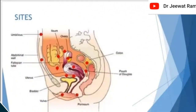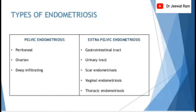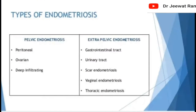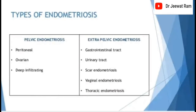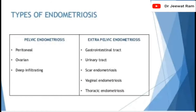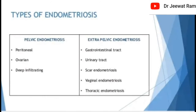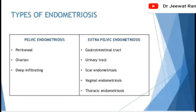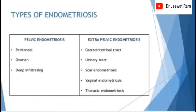This picture shows the sites of endometriosis. Types of endometriosis: pelvic endometriosis includes peritoneal endometriosis, ovarian endometriosis, and deep infiltrating endometriosis. Extrapelvic endometriosis includes gastrointestinal tract endometriosis, urinary tract endometriosis, scar endometriosis, vaginal endometriosis, and thoracic endometriosis.